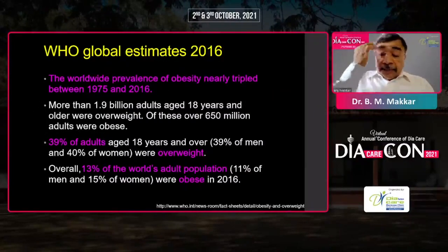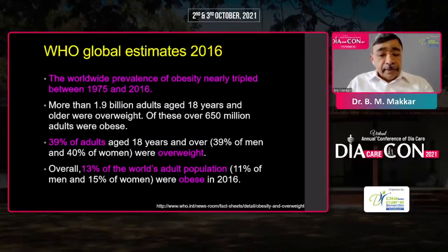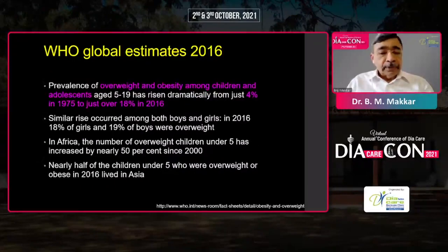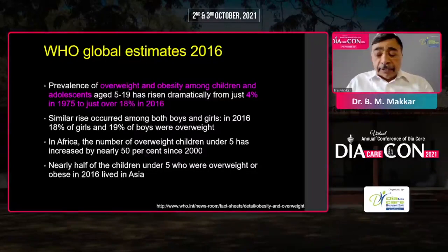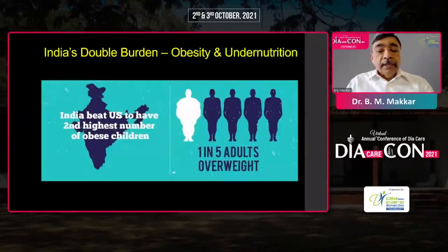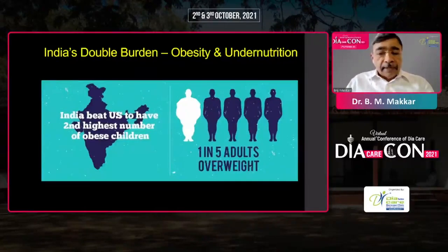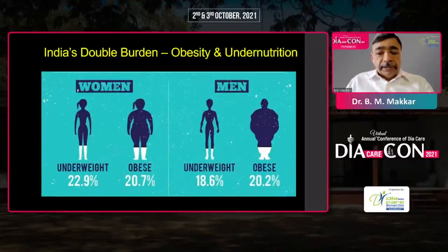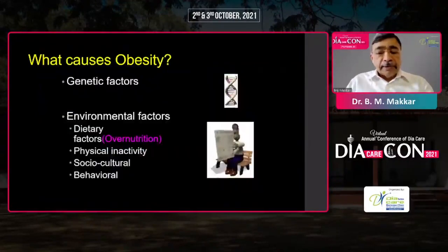If you look at the data over the last four decades, the worldwide prevalence of obesity has nearly tripled. There are almost 40% of adults globally who are overweight and almost 13% of the adult population is obese. This increase in prevalence is much higher in children and adolescents and has increased by 4.5 times, largely affecting Asia and developing countries. In India, we have one in five adults who are overweight, and almost 20% of adult women and men are obese as of today.